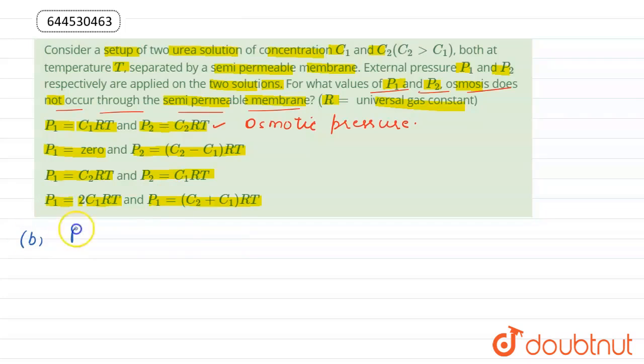In option B, C1RT is subtracted from both P1 and P2. From P1 we get zero, and from P2 if C1RT is subtracted, we get (C2 - C1)RT. So the second option is also correct.